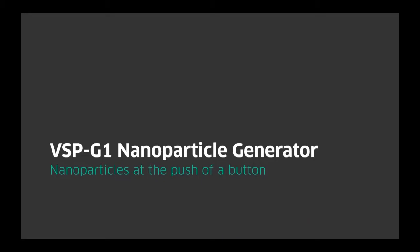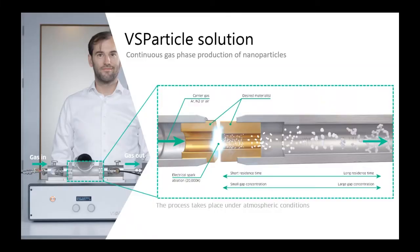I would like to start with the VSP G1 nanoparticle generator, which is the core of all our products and setups. On the left-hand side you can see a picture of the VSP G1 with a gas inlet on the left side, a gas outlet on the right side, and a reactor head in the middle. On the right you can see a schematic of the internals and the process. Something I would like to emphasize is that the process takes place under atmospheric conditions. We introduce a carrier gas — usually an inert gas like argon or nitrogen, but we can also use air.